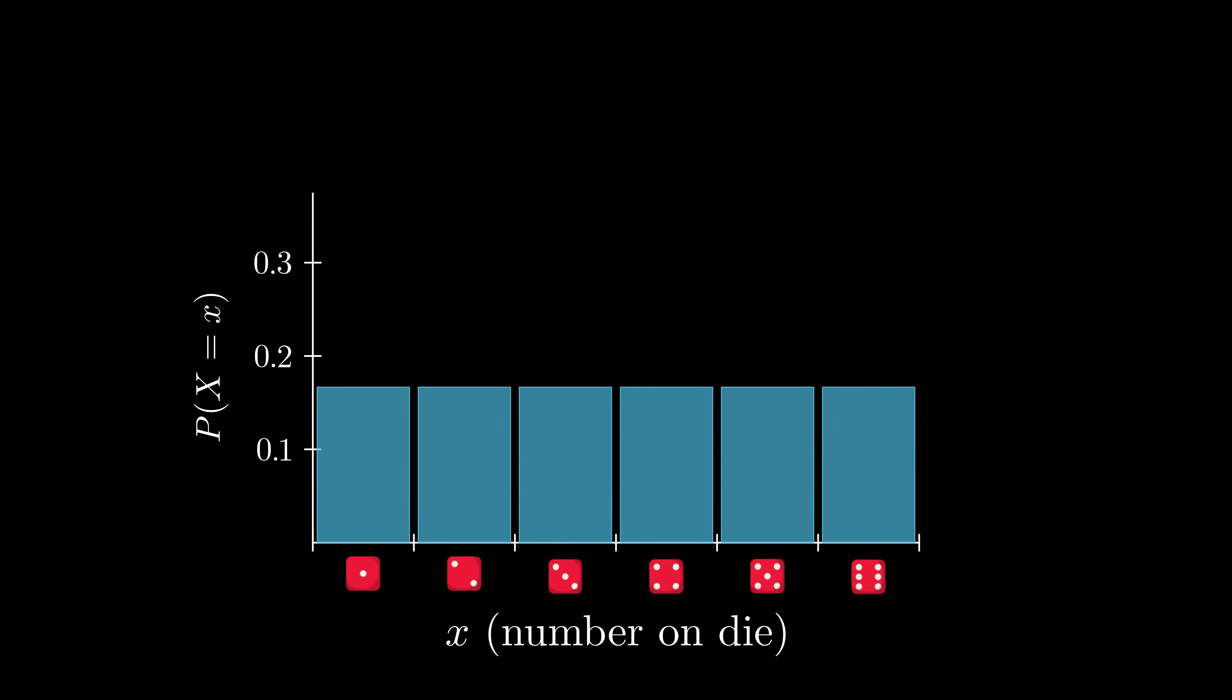We can summarize this scenario in a plot, where the x-axis contains all the possible outcomes, and the y-axis represents probability. The height of each bar represents the probability of seeing that outcome.